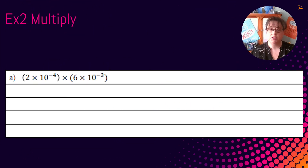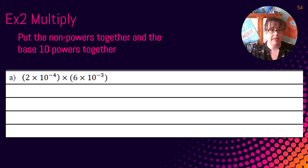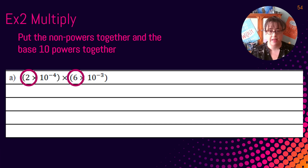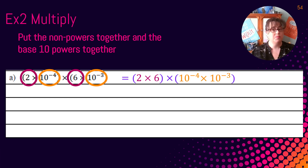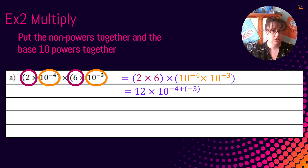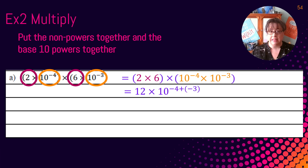We're going to begin in Jaguar Jots at example two, multiply. Our first problem is (2×10⁻⁴)(6×10⁻³). We begin by putting the non-power factors together and the base-10 powers together — multiplication is commutative, so we can rearrange. So we have 2×6 grouped together, and 10⁻⁴×10⁻³ grouped together. Two times six is 12, and when multiplying powers, we add the exponents. Negative four plus negative three is negative seven.